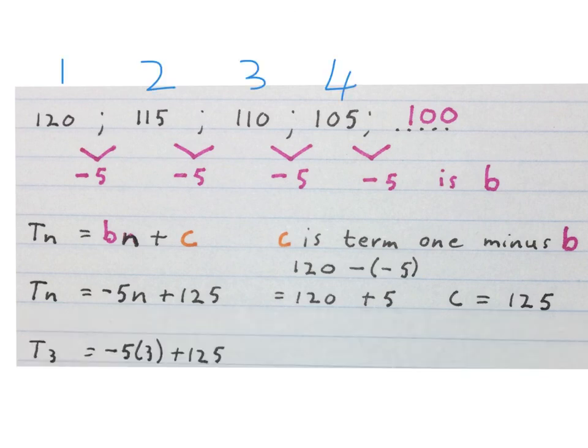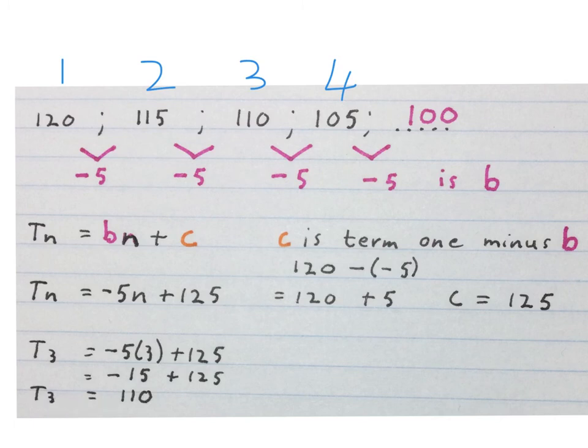Check if the formula works by working out term 3 equals minus 5 times 3 plus 125. That gives us term 3 is 110. We can see over here term 3 is 110. Please stop the video and get your brain around this.